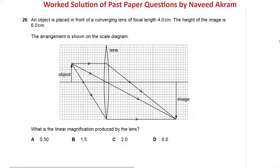Question number 26: an object is placed in front of a converging lens of focal length 4 cm; the height of the image is 6 cm. The arrangement is shown on a scale diagram. What is the linear magnification produced by the lens? Linear magnification equals the height of the image divided by the height of the object. The height of the image is given as 6 cm, but the height of the object is not directly given — however, this is a scale diagram on graph paper, so we measure the number of small boxes.